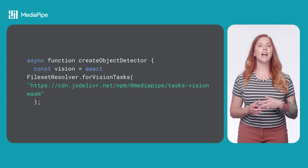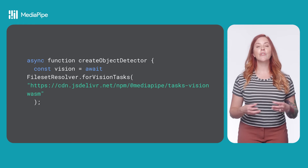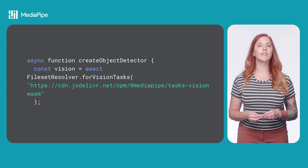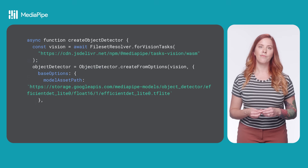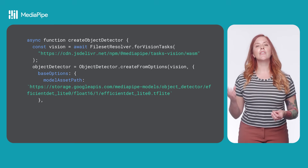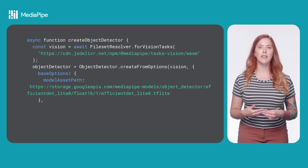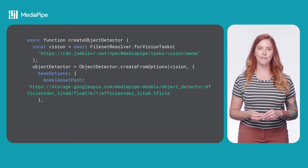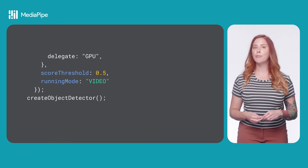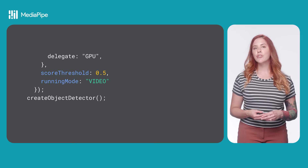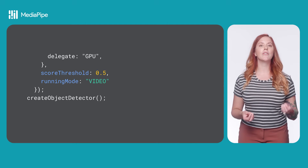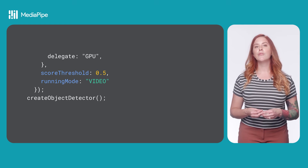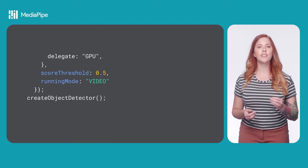Here we have a function, createObjectDetector. First, we configure our WASM binary loading using the fileset resolver for Vision Tasks method. Then we create the object detector using the ObjectDetector.createFromOptions method, passing the fileset resolver you just created and the model. You can also provide optional parameters like a score threshold, which indicates on a scale from 0 to 1 how positive the model should be to return a detection, and the running mode for the inference, which is either image or video — image is the default value.